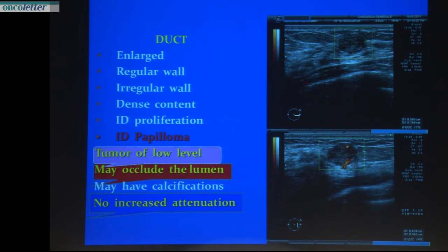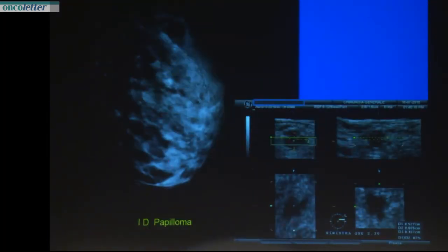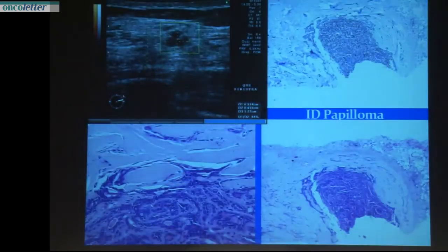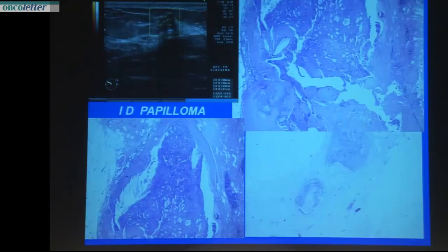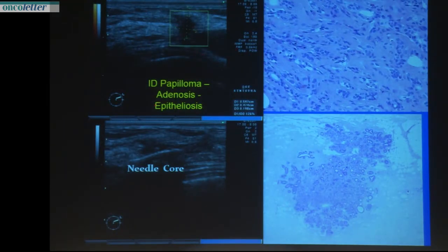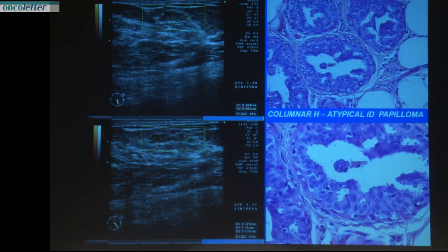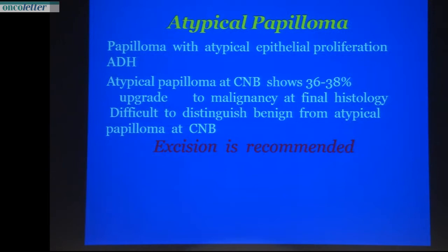Here is a duct completely full of proliferative lesion with increased vascularity inside, even with enhancement and shadowing in the lateral area. Another case shows increased vascularity — these cases require core biopsy. Another case with very irregular margins shows a papillary lesion in a very dense breast. A complex papillary adenosis and epitheliosis where the core is negative, and this is a typical intraductal papilloma — what do we do with a typical papilloma?